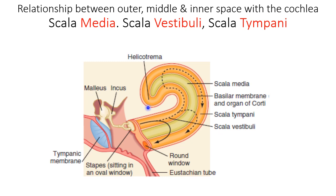The vestibule is the space facing the oval window. From the oval window, the space that starts is called the scala vestibuli. Scala vestibuli starts from here and then ends at the point called the helicotrema.